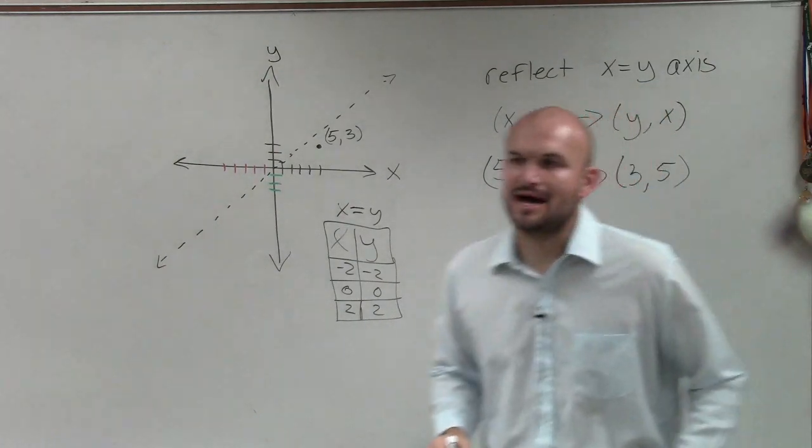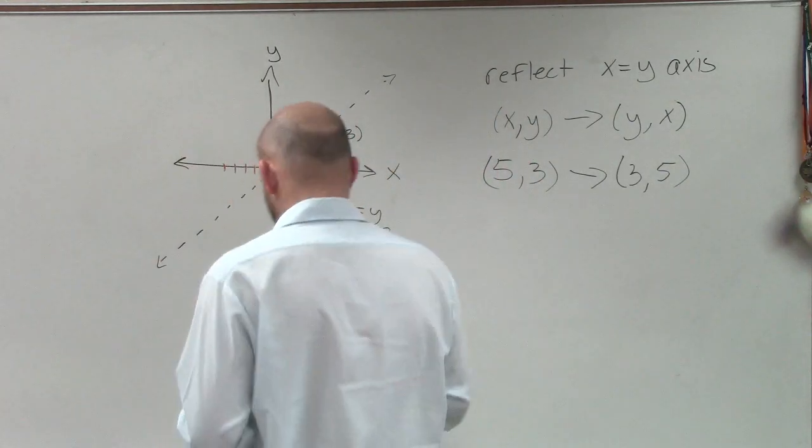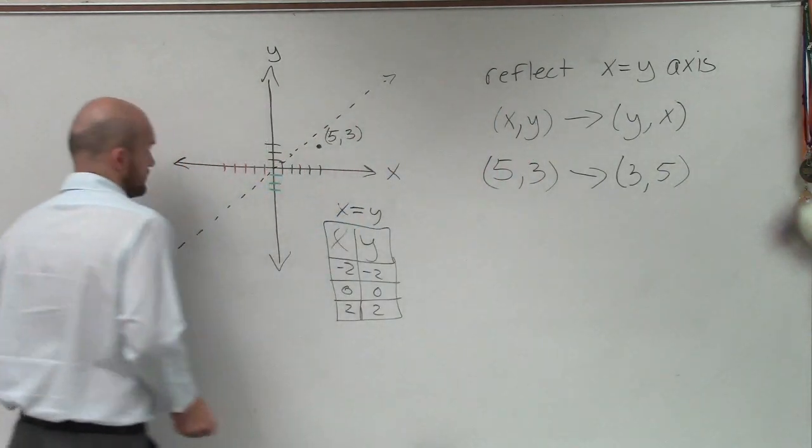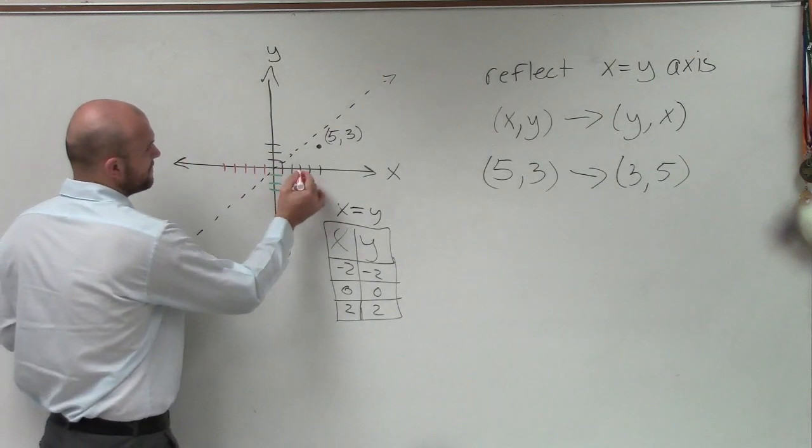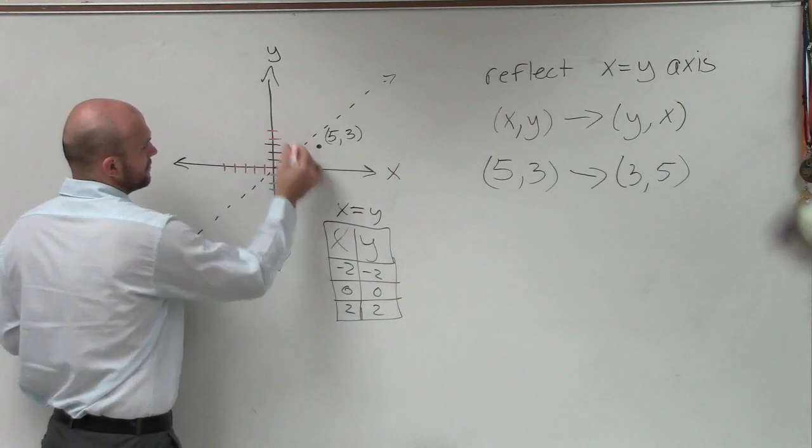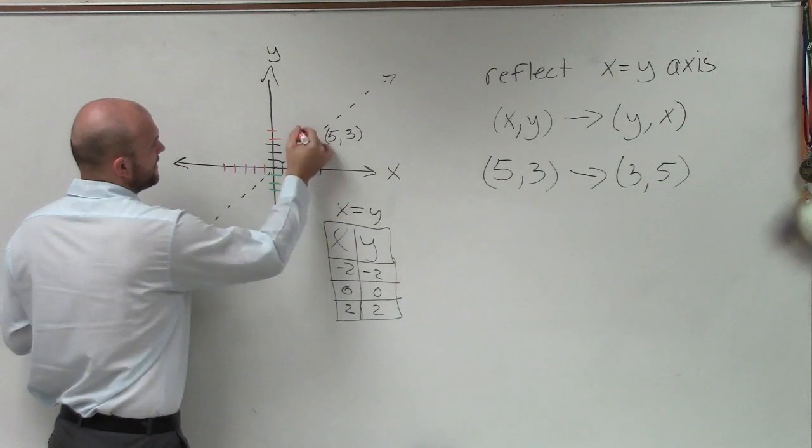So let's go and plot 3 comma 5 and see if that makes sense for Alexander. So if I go over 3 and then up 5, over 3, 1, 2, 3, up 5.